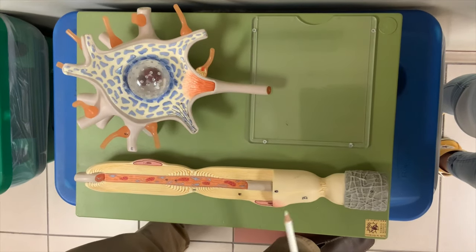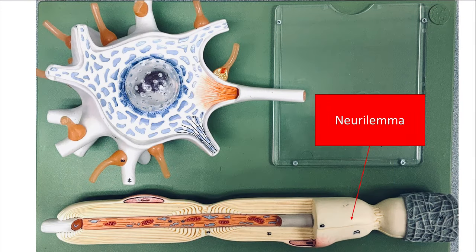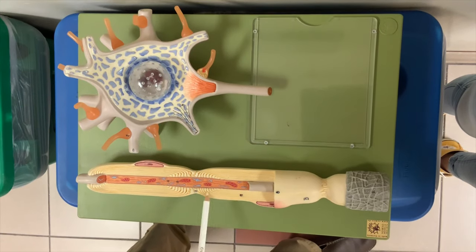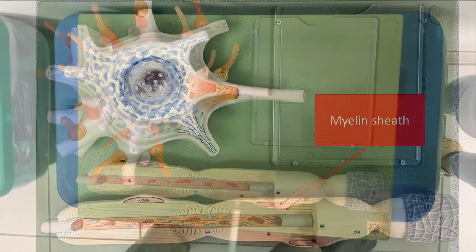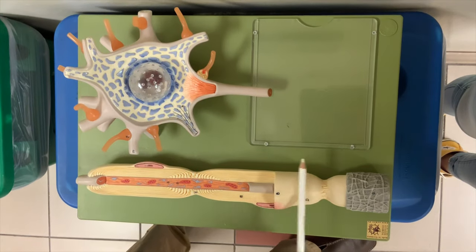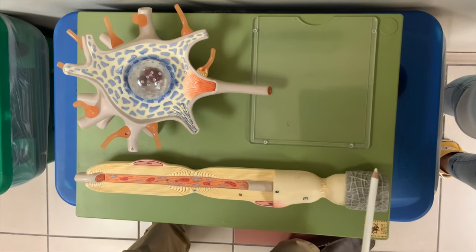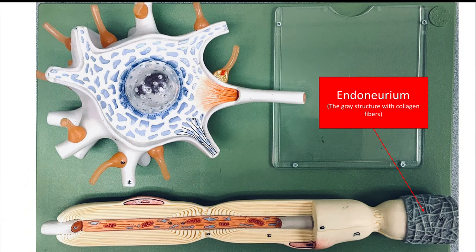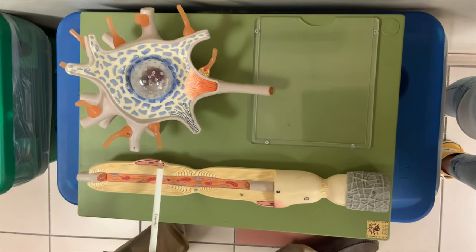Now, the most outer layer of a Schwann cell is called the neurolemma. But all these layers here are called the myelin sheath. So here's your myelin sheath, and the most outer layer is the neurolemma. This gray structure is the endoneurium. And lastly, you can see the nucleus of the Schwann cell.